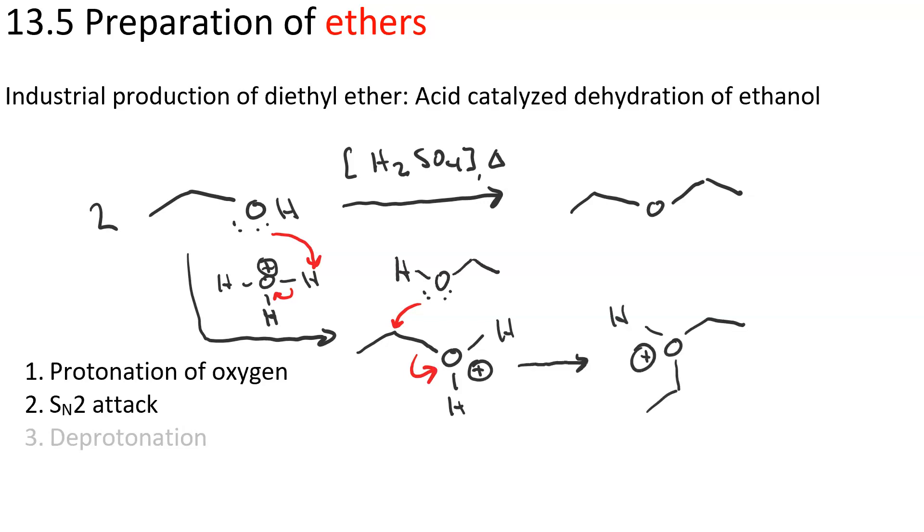Now we're almost there, but our final product does not have an oxonium, which means we need to get rid of this proton here. What do we use for a base? Well, there's plenty of water in concentrated sulfuric acid. So water molecule does proton transfer, takes it away from the ether, and we've got our diethyl ether.